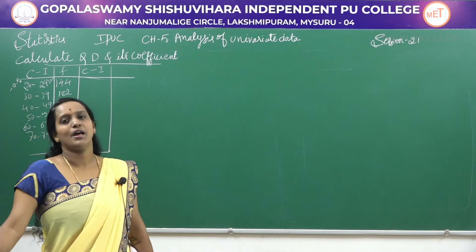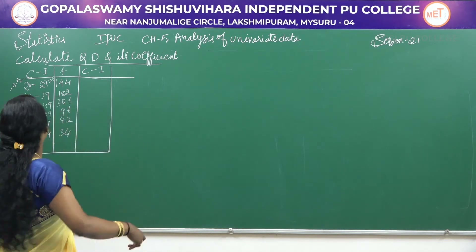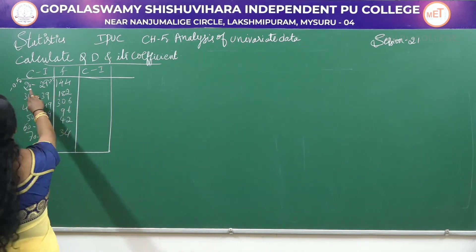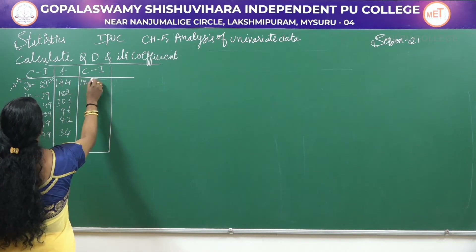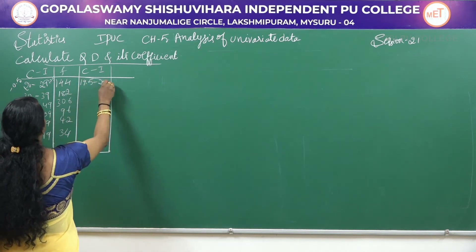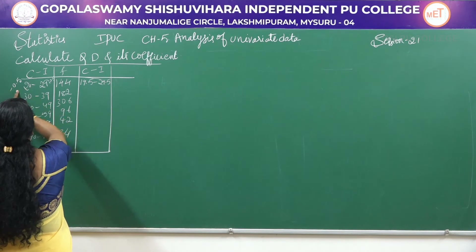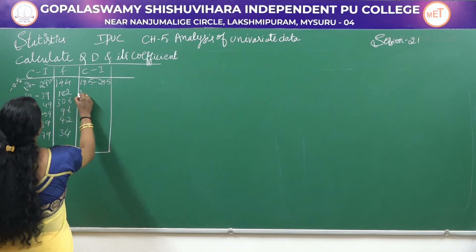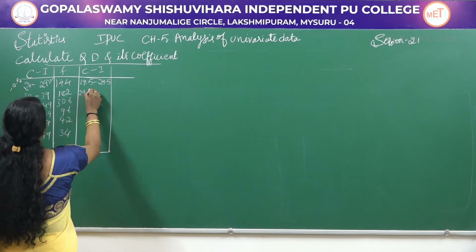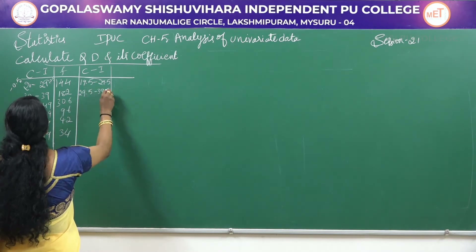So if I subtract here, 20 minus 0.5 it is 19.5 and this is 29.5. Similarly, we should continue the procedure for all the intervals so that we can make this continuous.